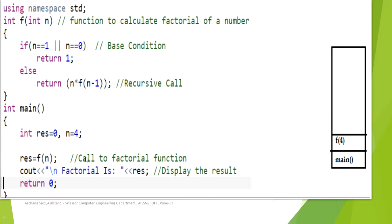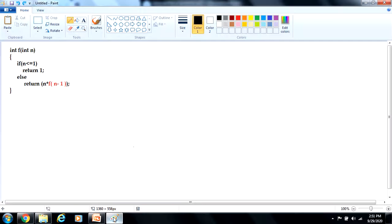Whenever you give any program for execution, its entry is made into the internal stack. The entry point for a C++ program is the main function — its entry is made into the internal stack. The next line of execution is f of n, that is the function call, and its entry is also made into the stack with a given parameter. For this function call, the parameter value is 4, that's why the entry is 4. Now let's see how this internally works.